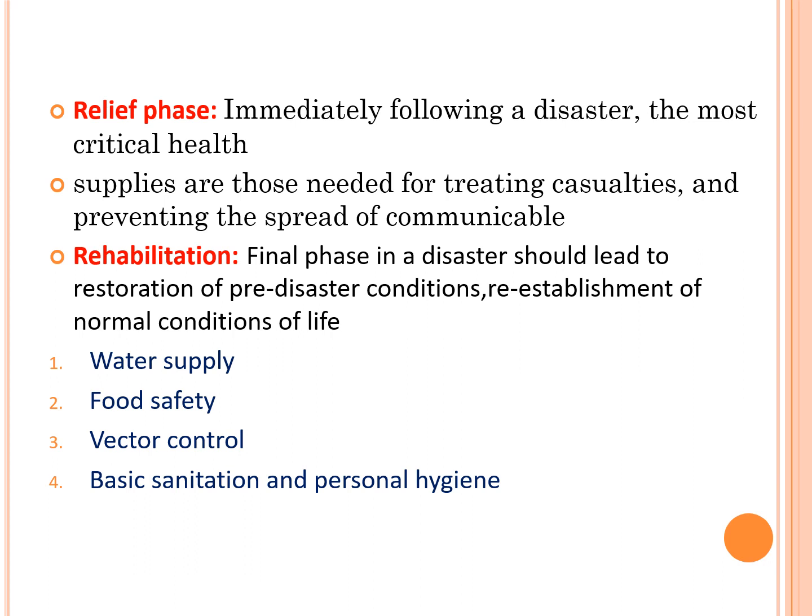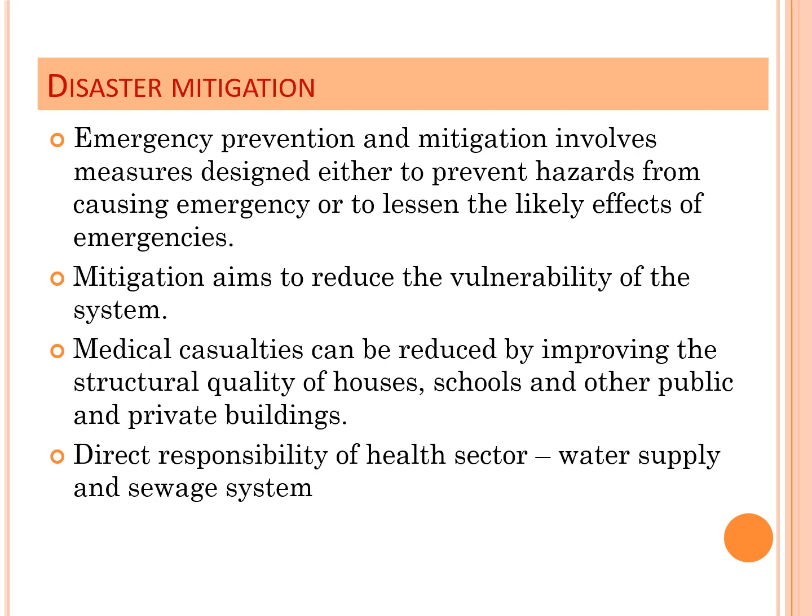In the rehabilitation phase, there should be restoration of pre-disaster conditions. Water supply and food safety must be checked for contamination — especially in chemical disasters. Mixing of excreta with sanitary wells should be addressed. Vector control is needed if there are outbreaks of dengue or chikungunya. Basic sanitation and personal hygiene are also important components of rehabilitation.